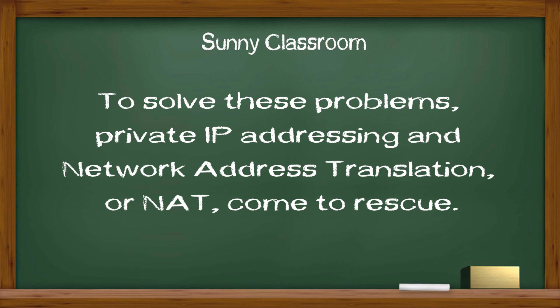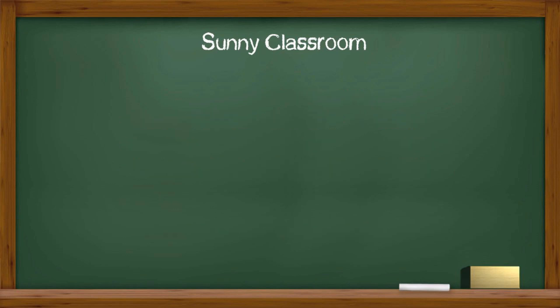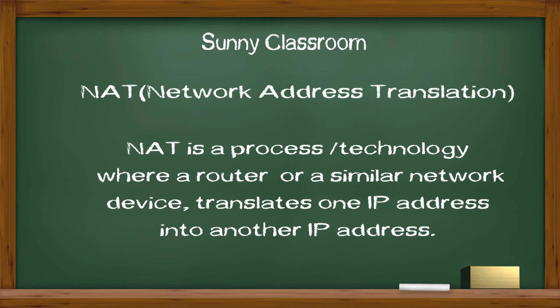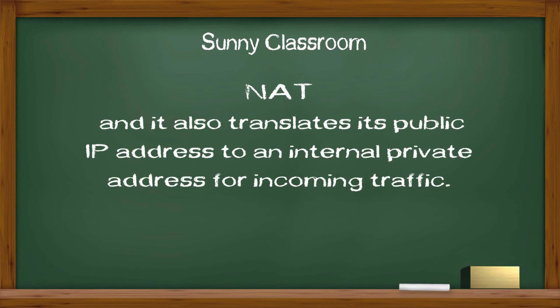To solve these problems, private IP addressing and Network Address Translation, or NAT, come to the rescue. Private IP addresses are free to anyone but not routable. NAT is a process or technology where a router or similar network device translates one IP address into another. Specifically, the router translates an internal host's private IP address to a public IP address for outgoing traffic, and translates the public IP address back to the private IP address for incoming traffic.